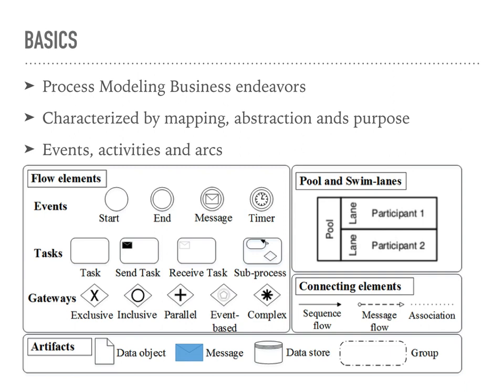Business process modeling has three main attributes: mapping, abstraction, and purpose. Mapping refers to the real-world phenomenon being represented. Abstraction refers to simplifying or omitting irrelevant details. And lastly, purpose, which represents the reasoning which drives what is being abstracted.